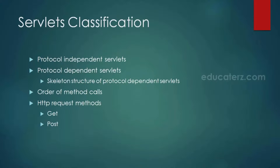Regarding the order of method calls: the servlet engine first calls the parameterized init method with ServletConfig, which by default calls the default init method. Then the servlet engine calls the public service method with ServletRequest and ServletResponse parameters, followed by the protected service method with HttpServletRequest and HttpServletResponse, and finally doGet or doPost is called.